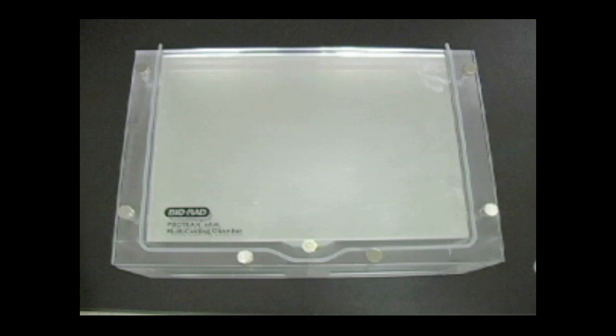Assemble the Protean Plus multicasting chamber with the desired amount of Protean Plus hinged spacer plates in the desired gel thickness and width.